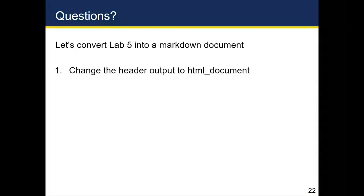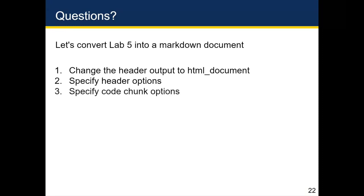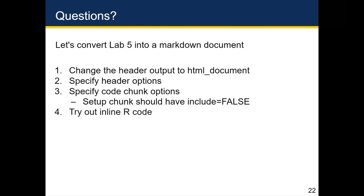To refresh all the different steps involved: after making sure your code is reproducible, change the output in the header from HTML notebook to HTML document. Then specify header options — adding a table of contents and making it floating is encouraged because it's very convenient. Then specify the code chunk options: for the first chunk add include equals false, and for all remaining chunks add echo equals false.